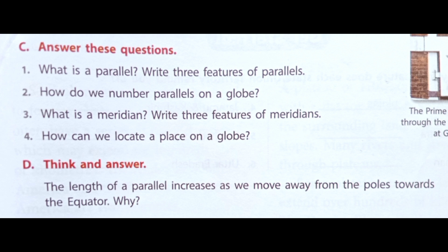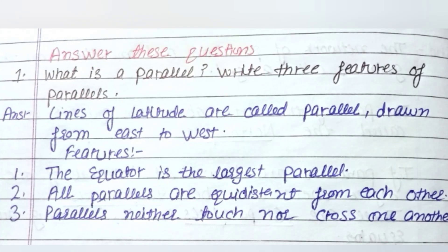Here, first question is: What is a parallel? Write three features of parallels. Answer of this question is: Lines of latitude are called parallel, drawn from east to west. Now the features of parallels are: the equator is the largest parallel; second one is all parallels are equidistant from each other; third one is parallels neither touch nor cross one another.